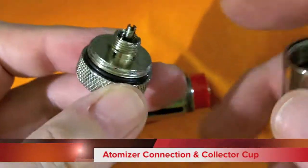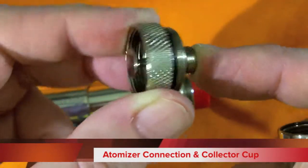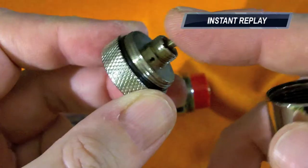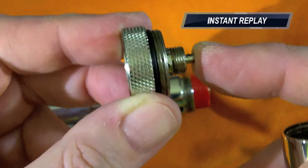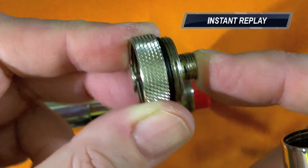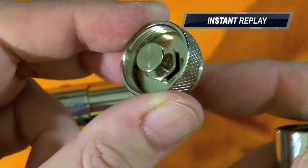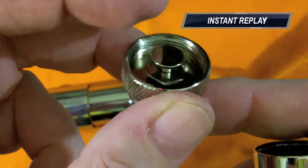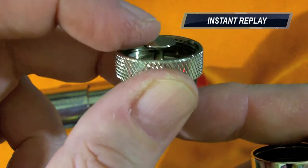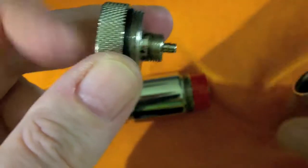The atomizer connector and collector cup have several parts and functions. The first is the pin here, which goes down to maintain a connection between the battery and the atomizer. The very act of screwing an atomizer onto the top pushes the pin down so that it makes a better connection with your battery.